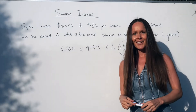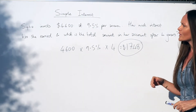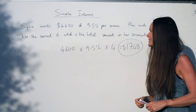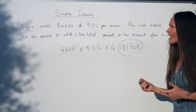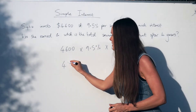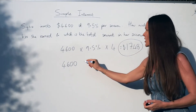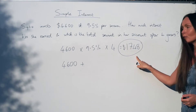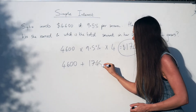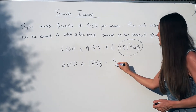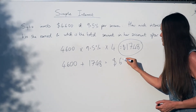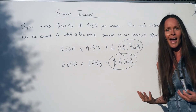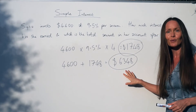You should get one thousand seven hundred and forty eight dollars — that is the simple interest she earns in four years. For the last part of this question, we have to work out the total amount Sophia has in her account after four years. It's as simple as adding the amount she originally invested, four thousand six hundred, to the simple interest she accumulated, one thousand seven hundred and forty eight, to get six thousand three hundred and forty eight dollars.